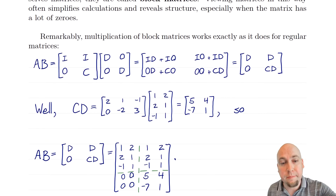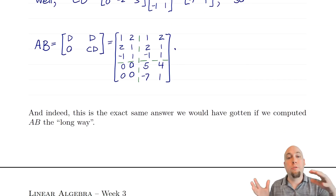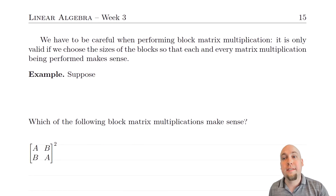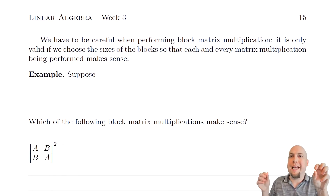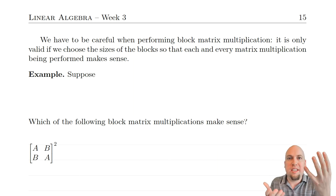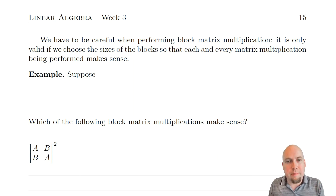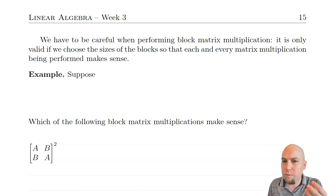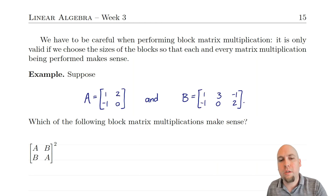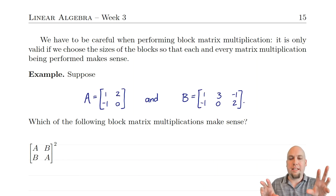This is true for block matrix multiplication in general — it just works, as long as every step of the computation actually makes sense and the sizes of matrices work together properly. There are lots of ways block matrix multiplication can go wrong, all related to sizes of the matrices and blocks. Let's go through examples to see how things can go wrong, so we know what to avoid.